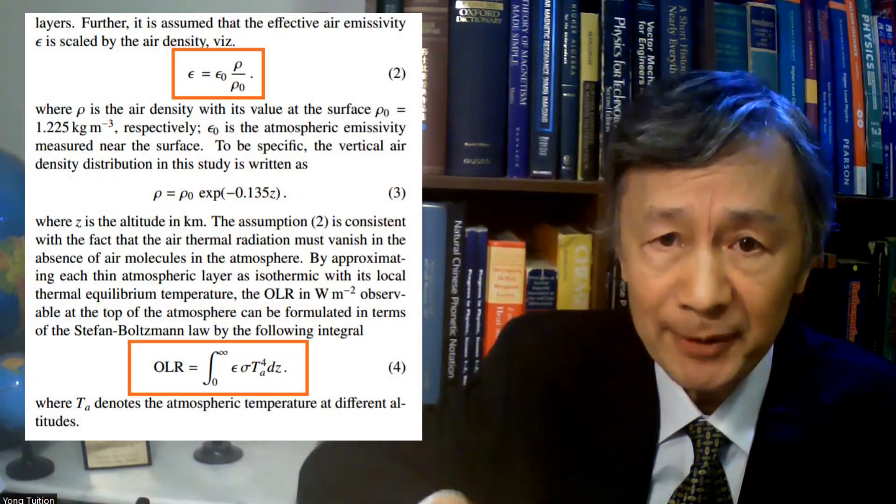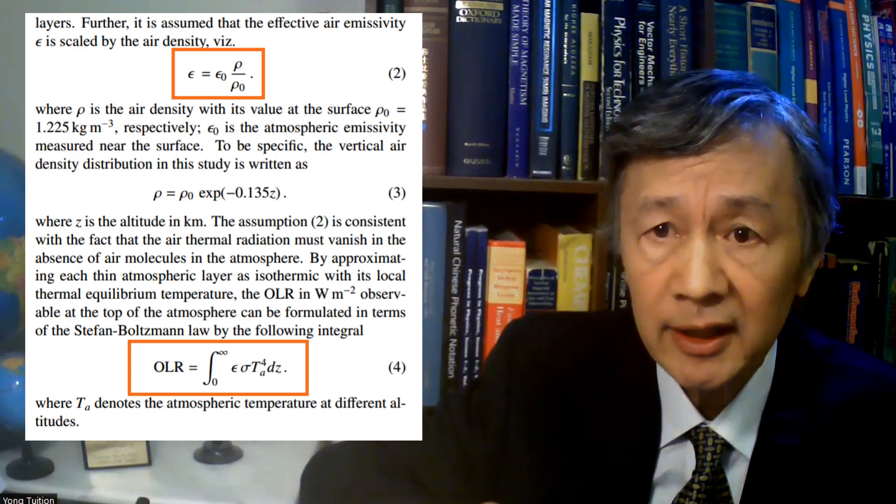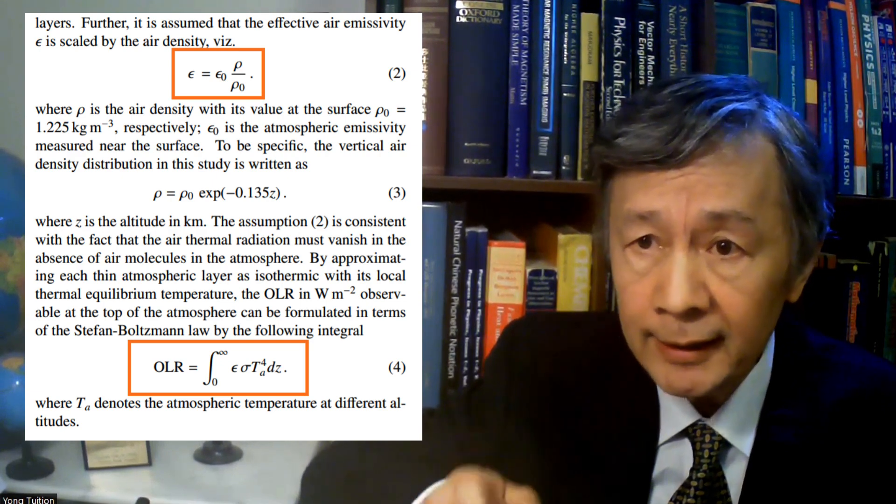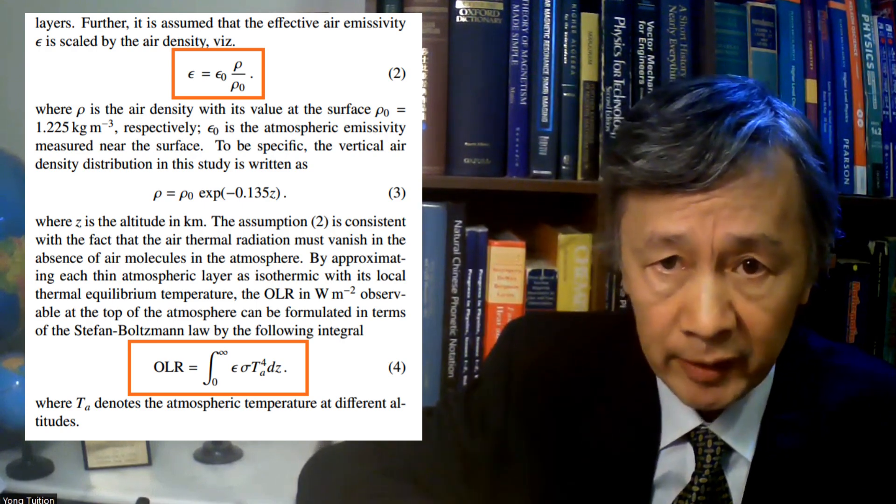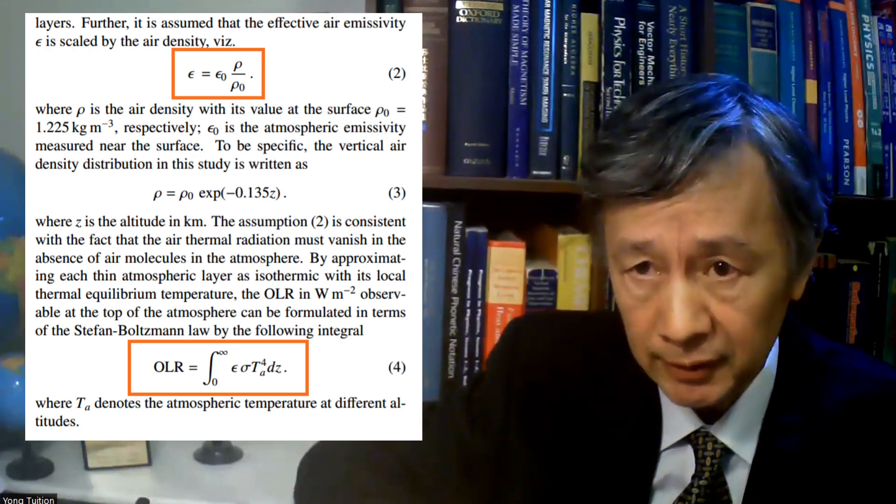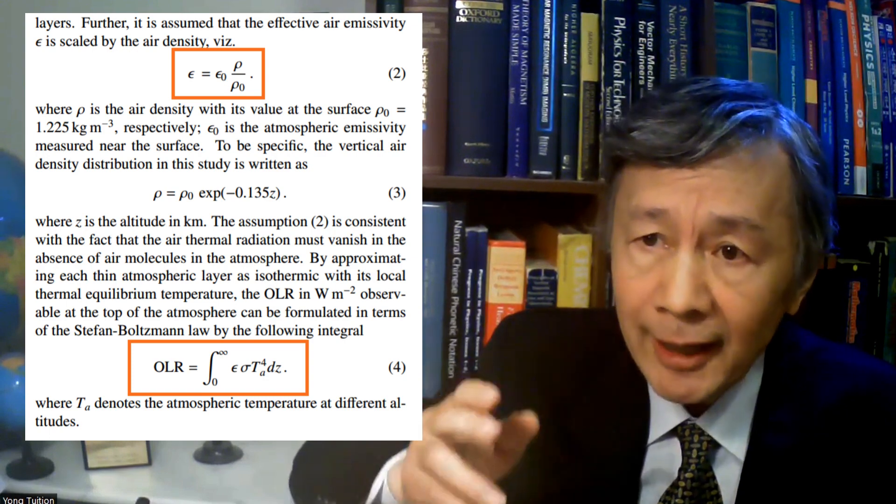Here, Epsilon is the effective air emissivity, Rho is the air density, and T sub A is the atmospheric temperature at different altitudes. Because the air density and the vertical atmospheric temperature can be directly measured, therefore,